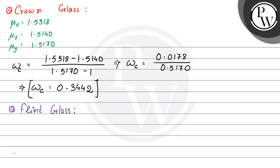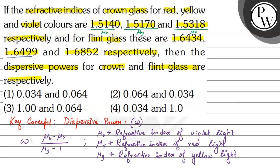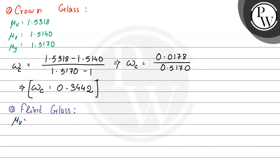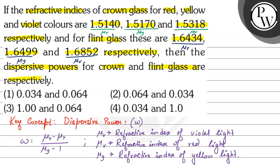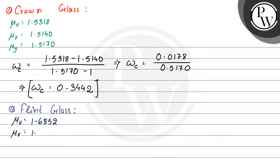Similarly, for flint glass, the order is the same: first red, then yellow, then violet. So mu_r is 1.6434, mu_y is 1.6499, and mu_v is 1.6852.